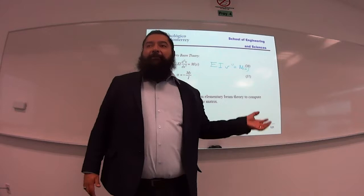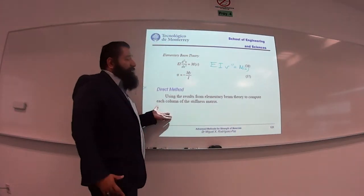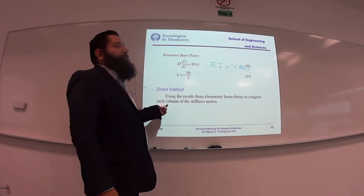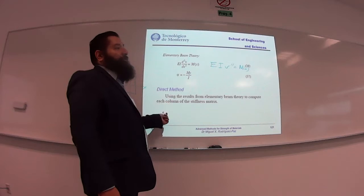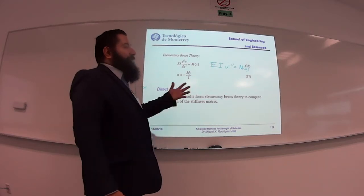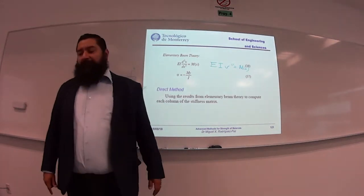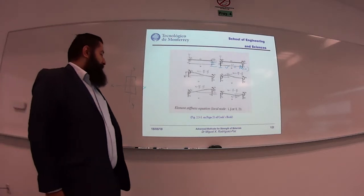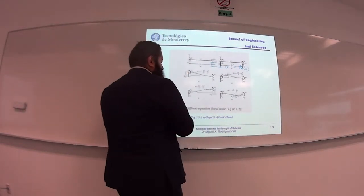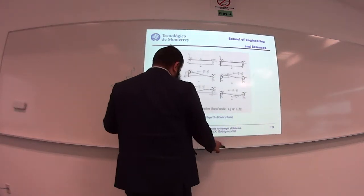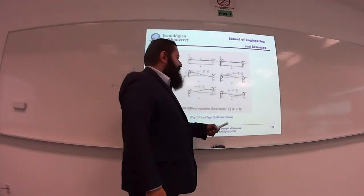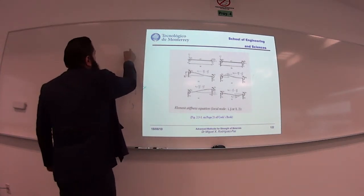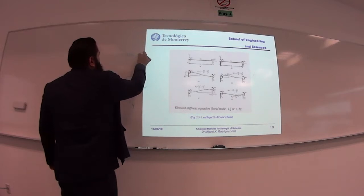We are going to derive the equations for the stiffness matrix of the beam element using something called the direct method. It involves applying unit displacements in the degrees of freedom — either one unit rotation or one unit vertical displacement to each of the nodes — and with that we recover the stiffness matrix for a beam element. This approach is from a very good book on finite elements by Cook.